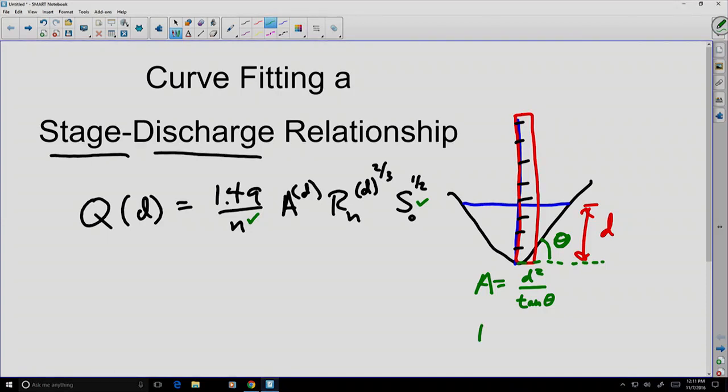The wetted perimeter can be found using a relationship: 2 times the depth divided by the sine of that angle. And finally, the hydraulic radius, which is the ratio of those two things, can be calculated to be the depth times the cosine of the angle divided by 2.